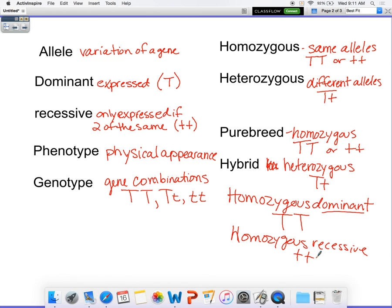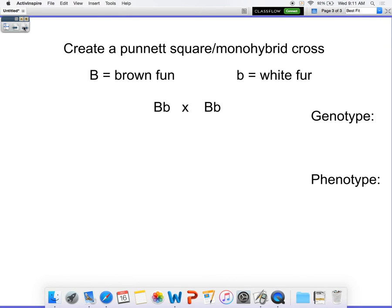So now that we've got our basic terms down, now let's go into how to practice these Punnett squares. We're going to create a Punnett square, which is also called a monohybrid cross.